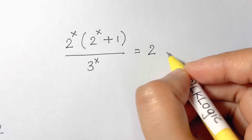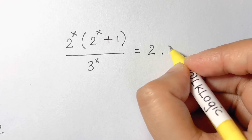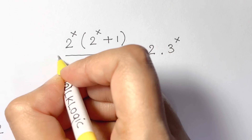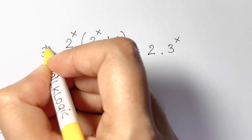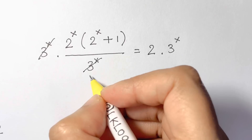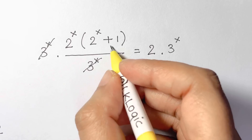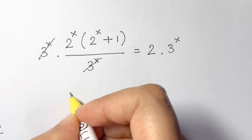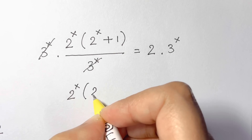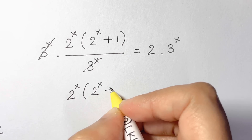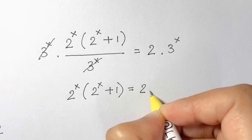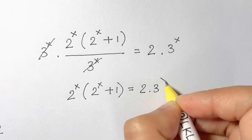We multiply both sides by 3 to the power of x to eliminate it from the denominator, and we are left with 2 to the power of x times (2 to the power of x plus 1) equals 2 times 3 to the power of x.